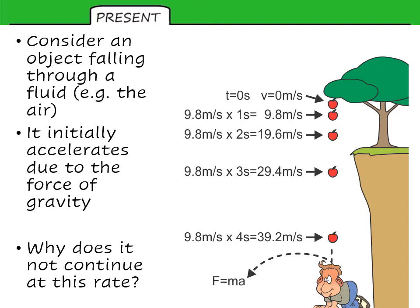Consider an object such as an apple falling through a fluid such as air. Initially it will accelerate at a constant rate due to the force of gravity. So if this were to continue, after one second we travel at 9.8 m/s, after two seconds 19.6, then 29.4, 39.2, and so on until you hit the ground or hit somebody.